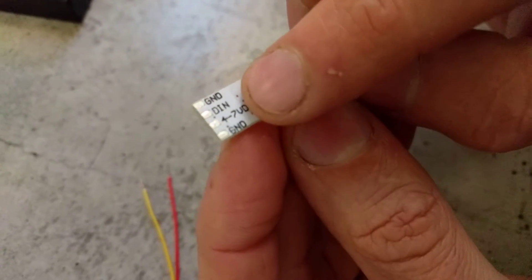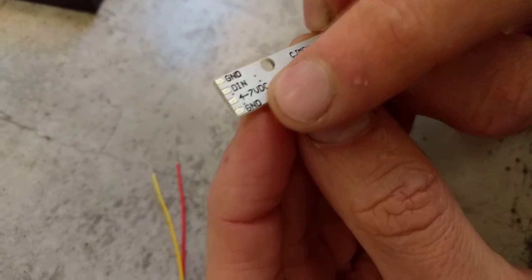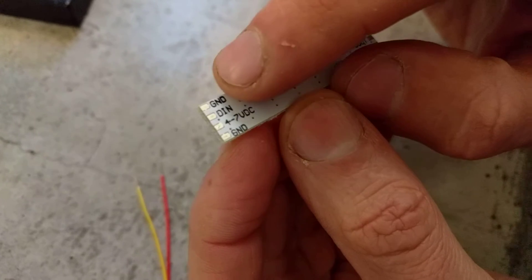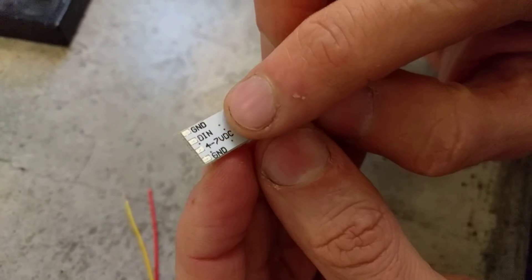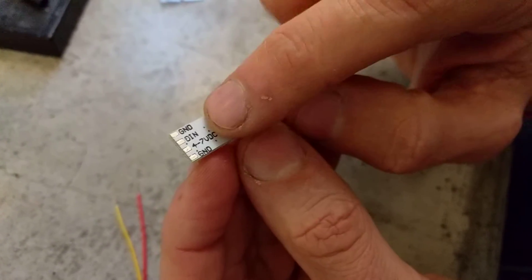So we've got ground, digital in, our voltage, and then we've got another ground. So we're going to use three out of these, so we'll use the ground, the digital in, and the VCC to attach our wires to.